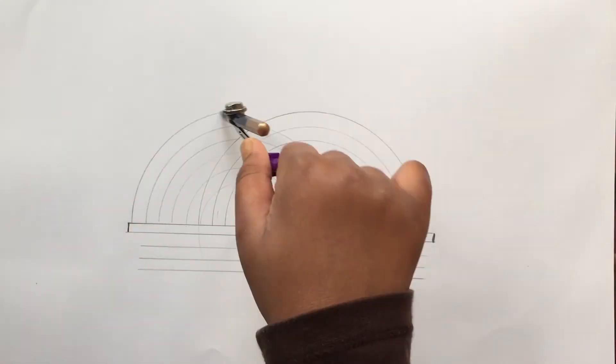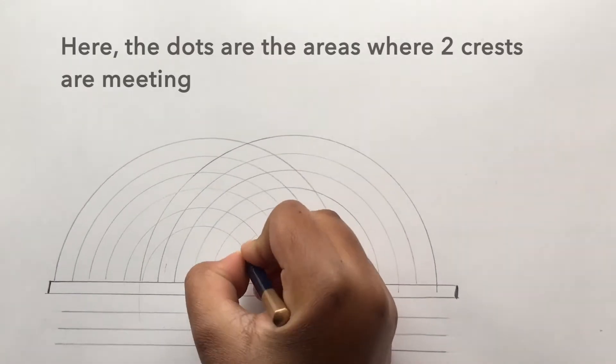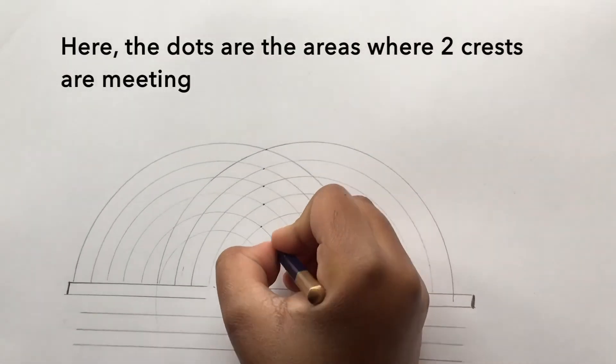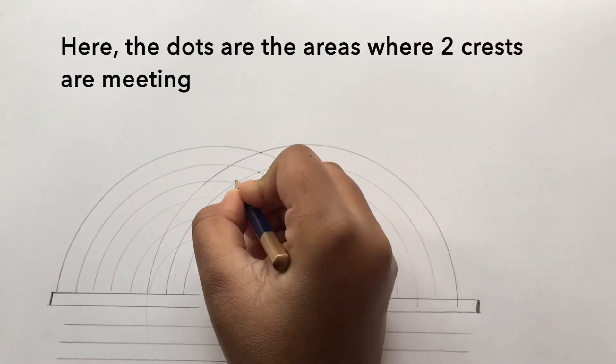A crest on a crest creates a taller and more intense wave which gives rise to high density regions, which are the areas where you can see the line.